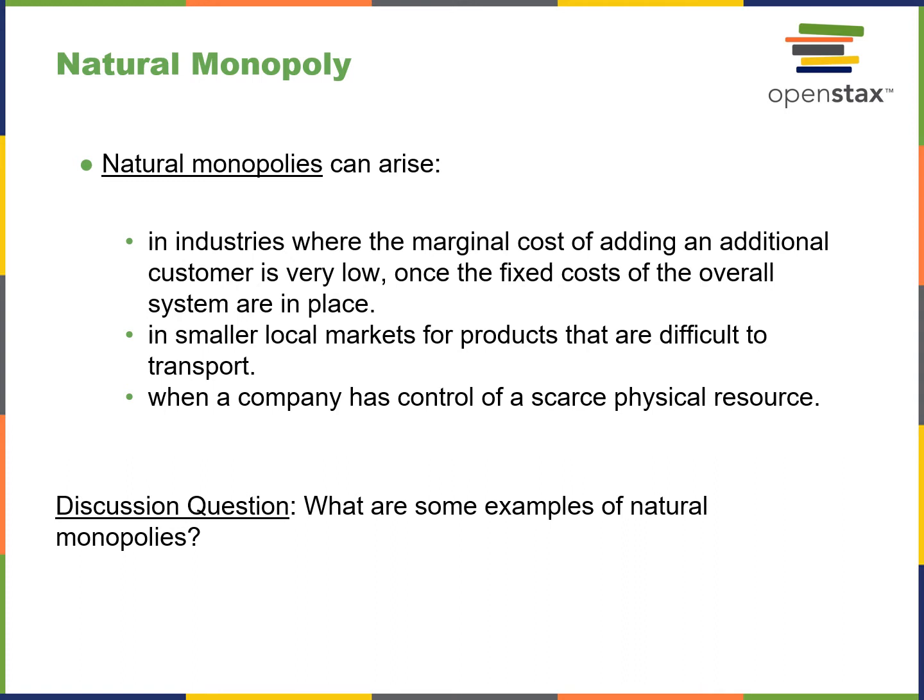Natural monopolies occur in an industry where the marginal cost of adding additional customers is very low — once the fixed costs and overall systems are in place, in smaller markets, for products that are difficult to transport, and when a company has control of a scarce physical resource. For example, De Beers in South Africa has a near monopoly on diamonds, since you can only mine diamonds where they exist, and there are very few places.